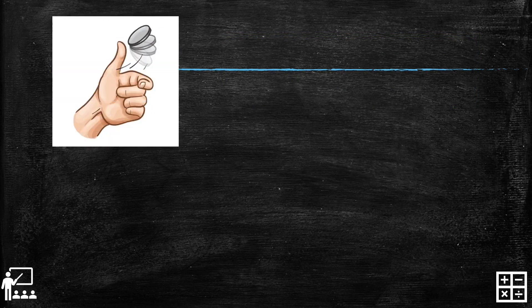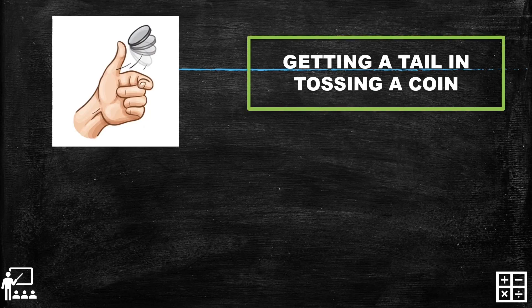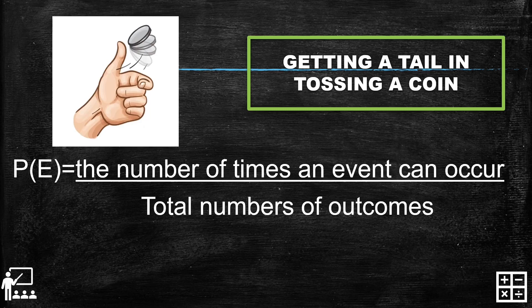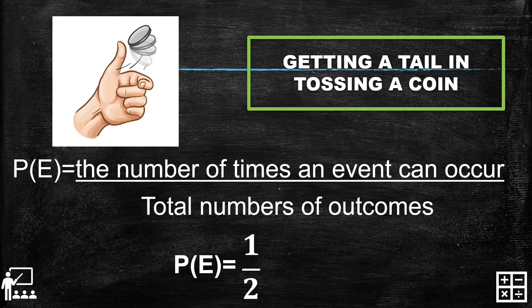Next is tossing a coin. The event we're going to use is getting a tail when tossing a coin. Using the formula, the number of times the event can occur is how many tails a coin has — one. The total number of outcomes, or the total number of sides of a coin, is two. So the probability for this event is one over two, or one half.